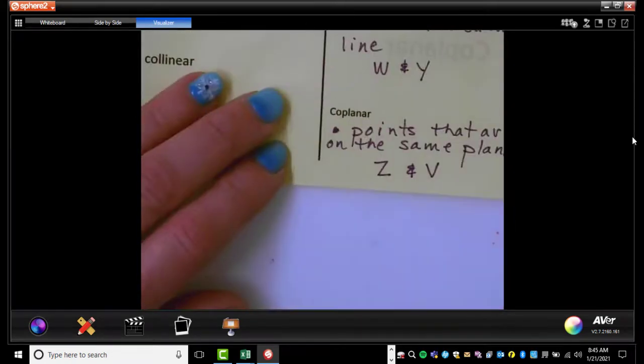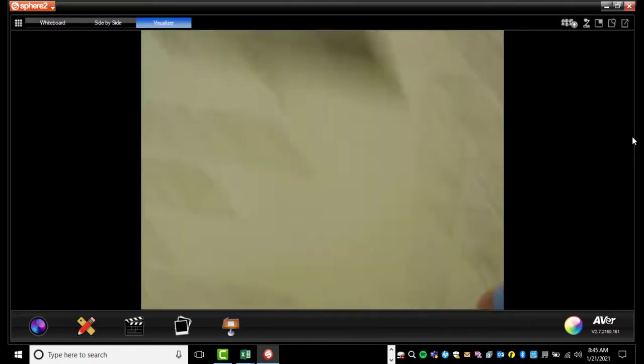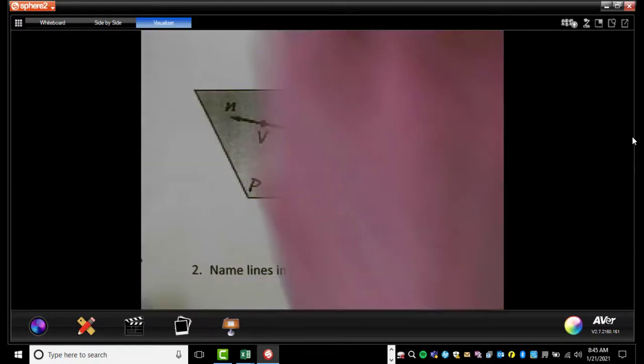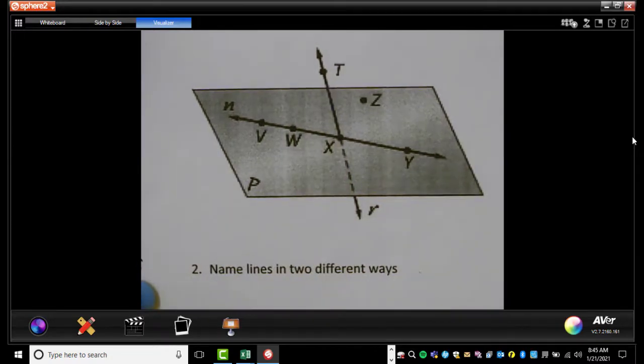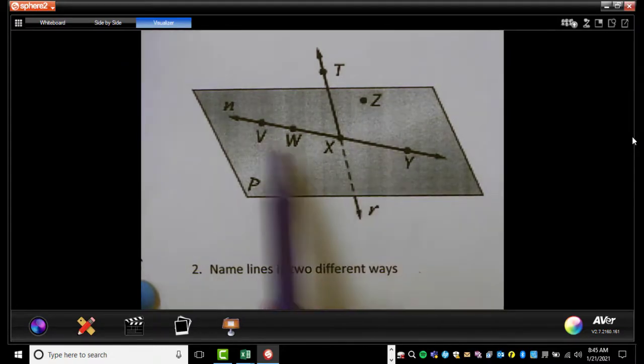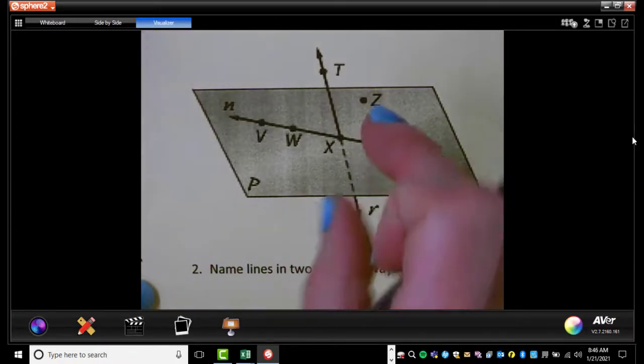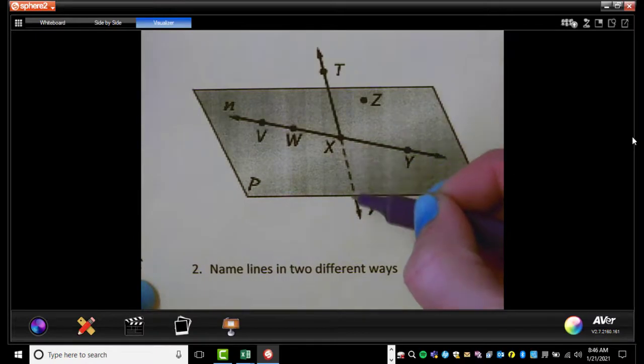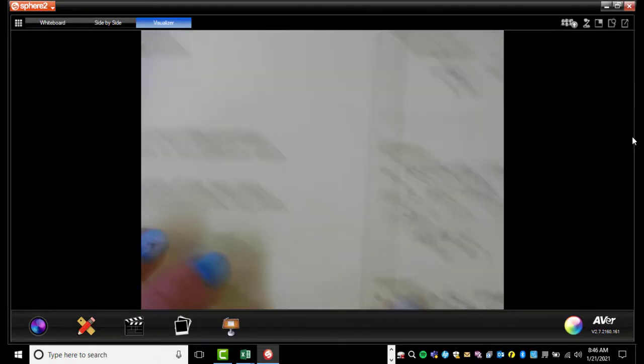And then coplanar, probably makes sense. Points that are on the same plane. And so I end up, I just picked Z and V. They just happen to be on the same plane. Now on this picture, this line is cutting through like the piece of paper. So just so you know, T is not on this plane. All these other letters, X, Y, Z, V, and W would all be on plane P. But this line ends up kind of, yeah, and it's hard. This is a three-dimensional picture on a two-dimensional piece of paper. And sometimes that is hard to visualize. But because of these dots right here, it just means that this line R is cutting through the plane. All right, let me show you this one last time here for this last one.